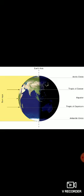Since the earth rotates in an anti-clockwise direction, we feel like the Sun is rising in the east and setting in the west, and that is how we measure the length of day and night.